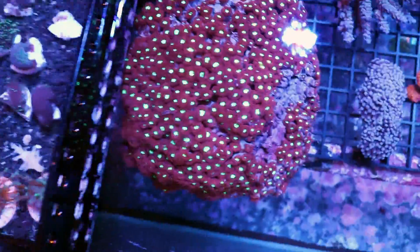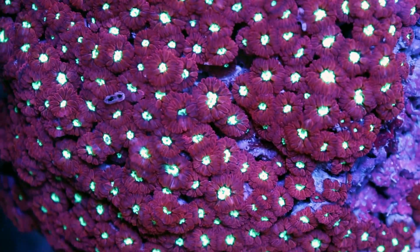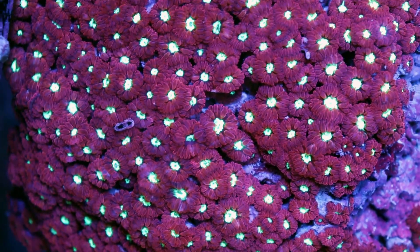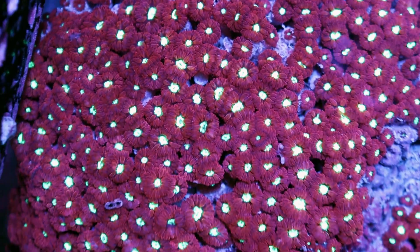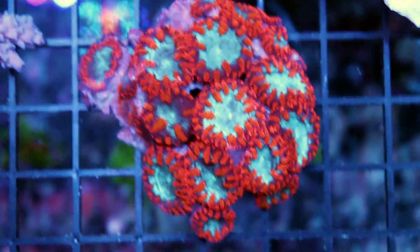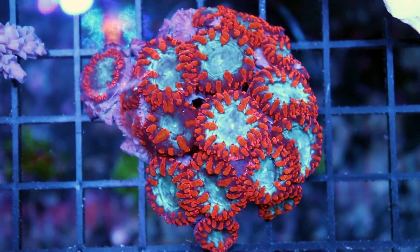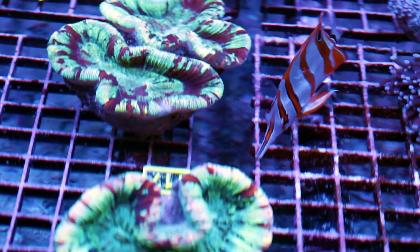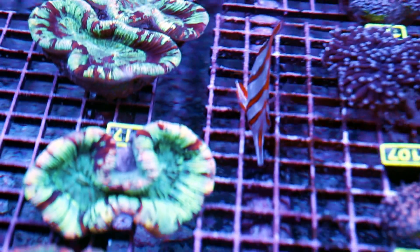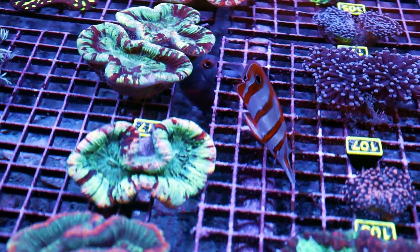This is also easy to keep, but this is the Blastomousa Merleti. So it's a blasto as well, but you can see it's got tons of little heads. It grows many, many heads compared to these kind of coin-sized heads that you see here on the Welsi. Thank you, Mr. Copperband, for being our friendly Aptasia eater and so far reef safe. Knock on wood, I probably shouldn't have said that.